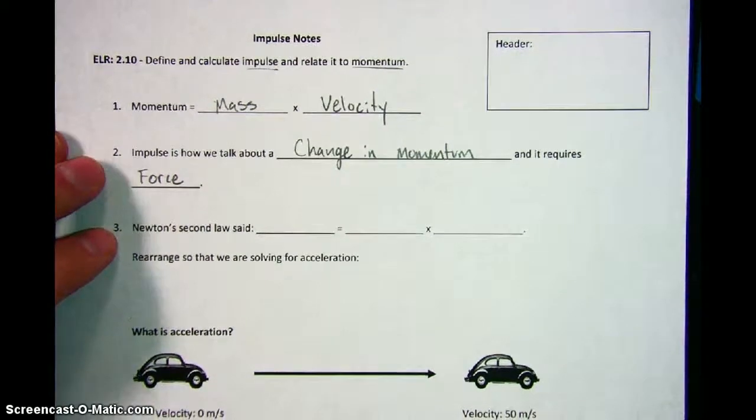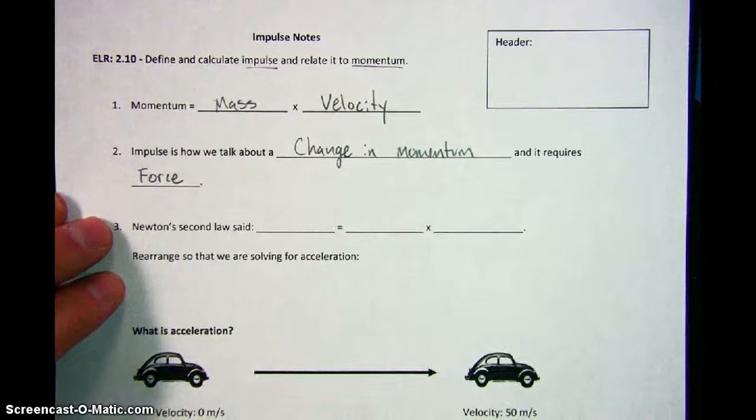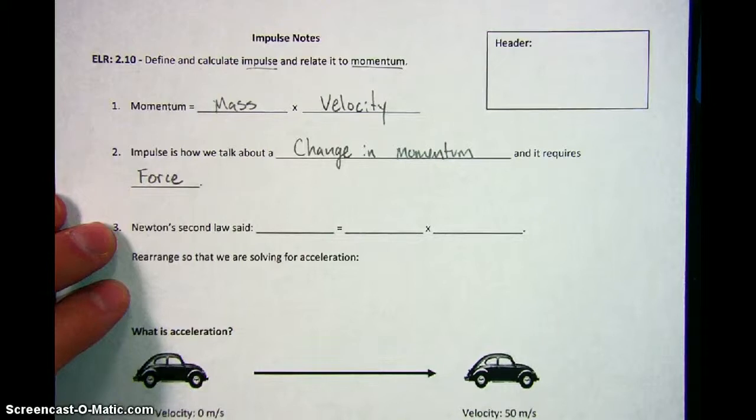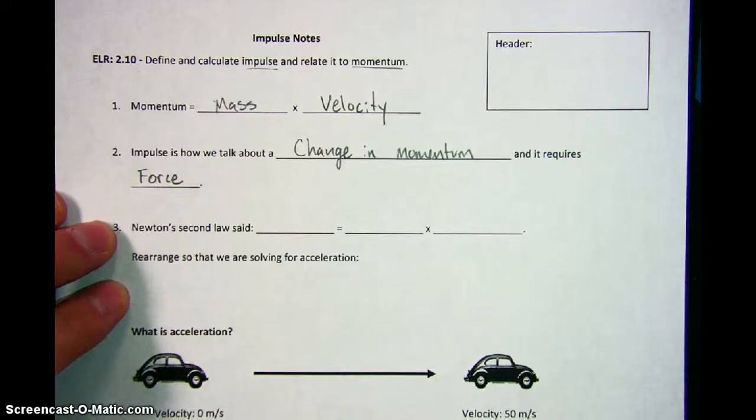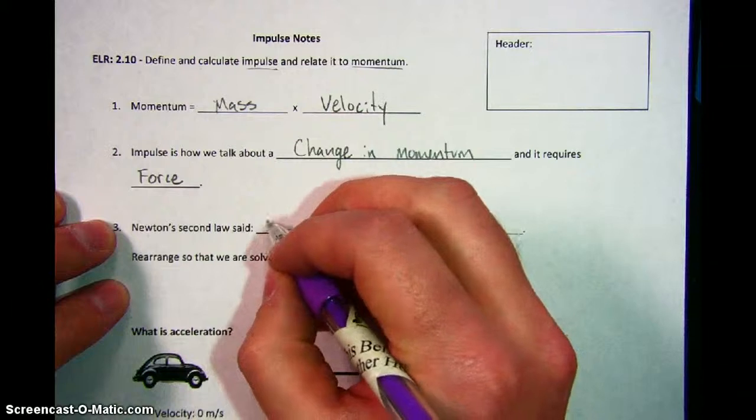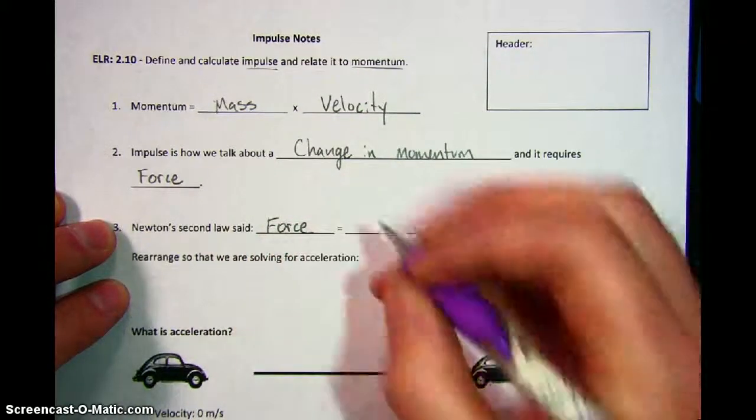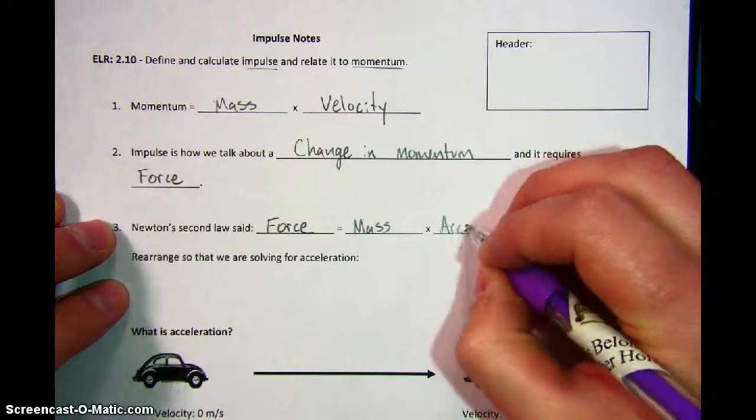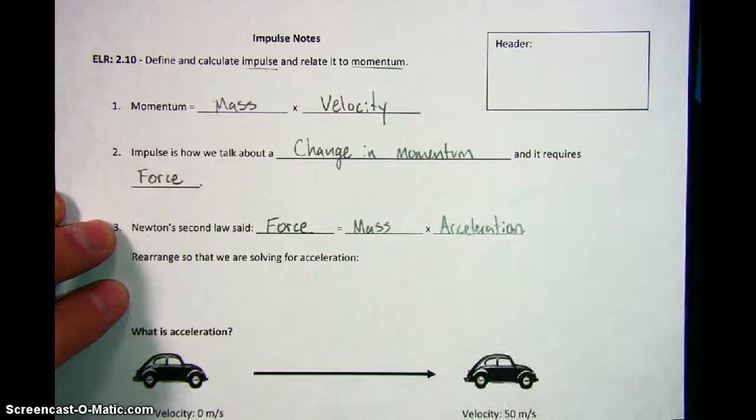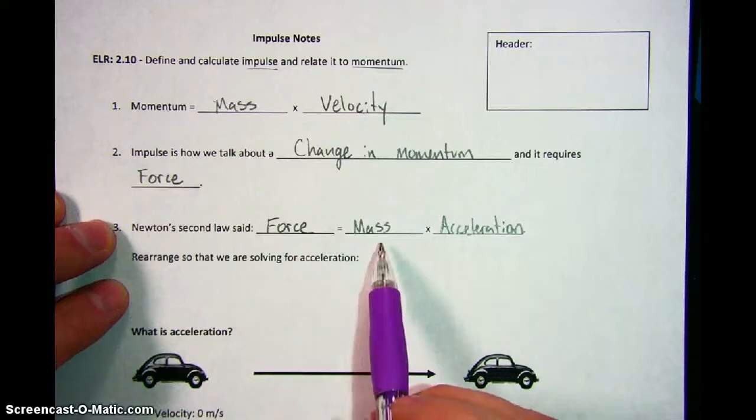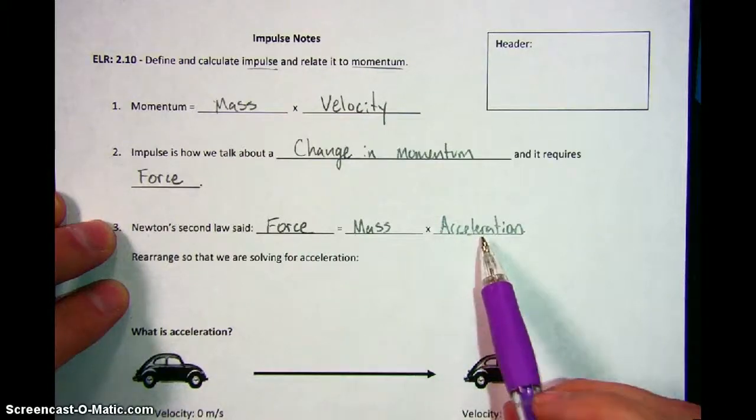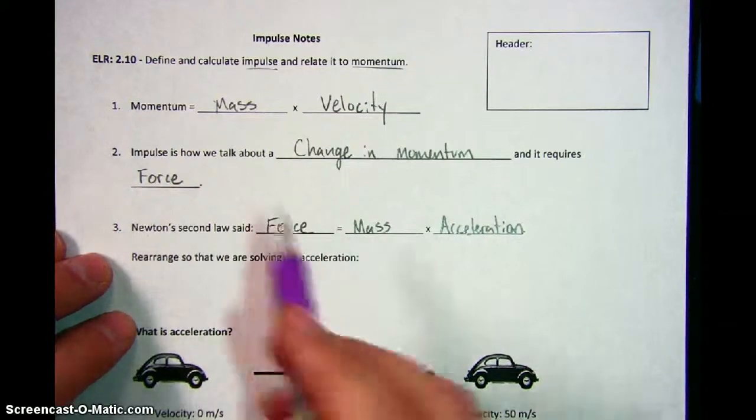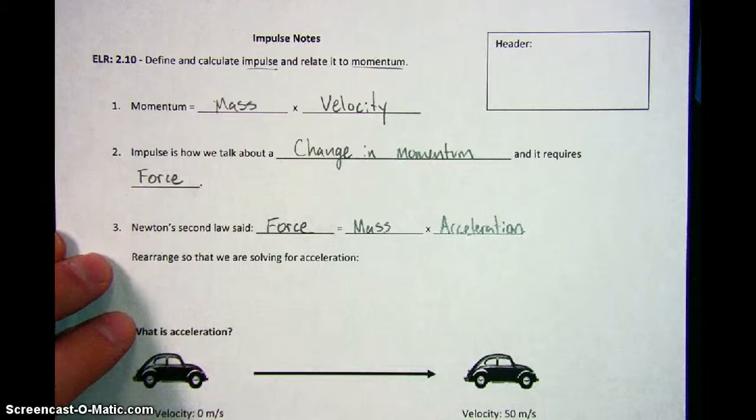So the next part of this we have to talk about is what Newton said, and we are going to go to Newton's second law. This is something we haven't talked a lot about in class yet. Newton's second law told us what force is. He said that force is equal to an object's mass times the amount of acceleration. So if you have an object that is really heavy and is speeding up really fast, you have a ton of force. We need to use his equation in order to connect our impulse and momentum ideas.